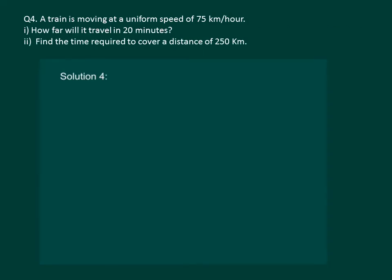Let us read the question on the slide. A train is moving at a uniform speed of 75 kilometers per hour. First, how far will it travel in 20 minutes? And second, find the time required to cover a distance of 250 kilometers. It is important to understand that uniform speed means it is not changing at all, and 75 kilometers per hour means it travels 75 kilometers in one hour. Since the speed is uniform, the distance covered is directly proportional to the time taken.